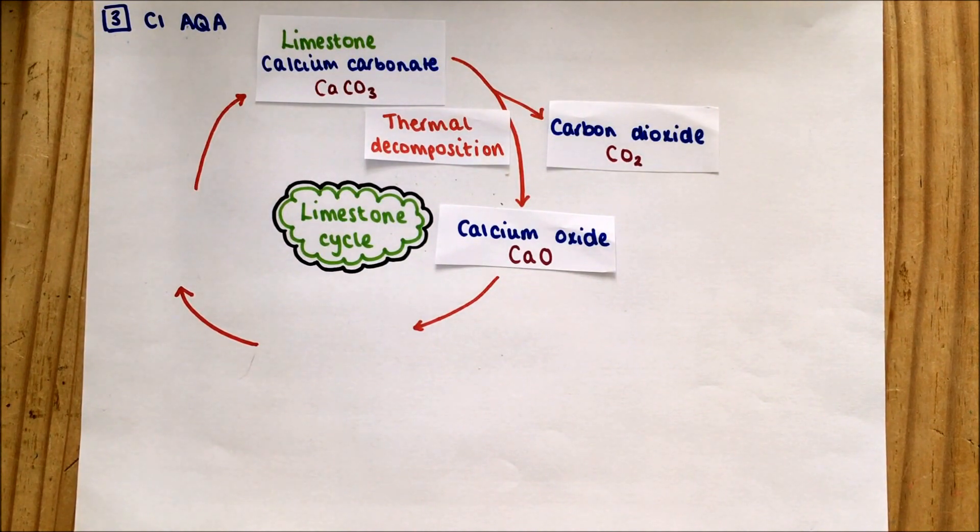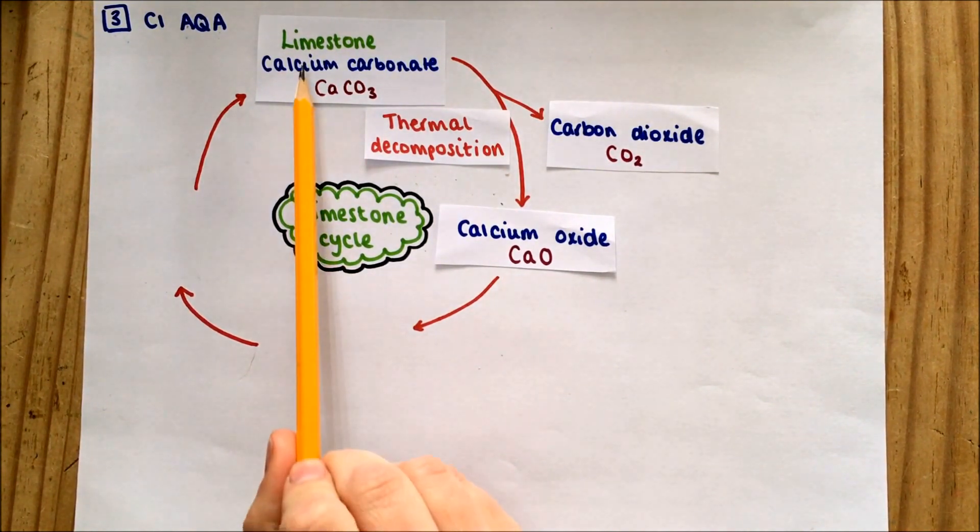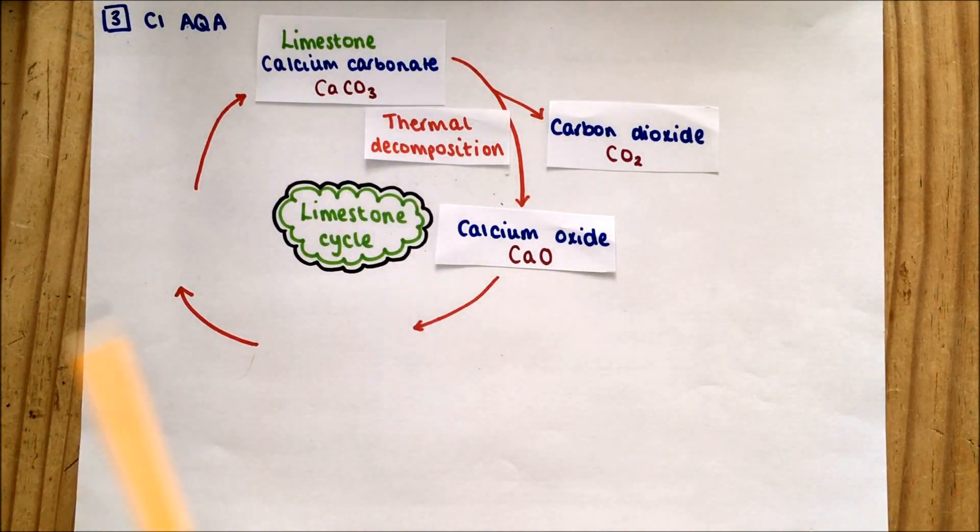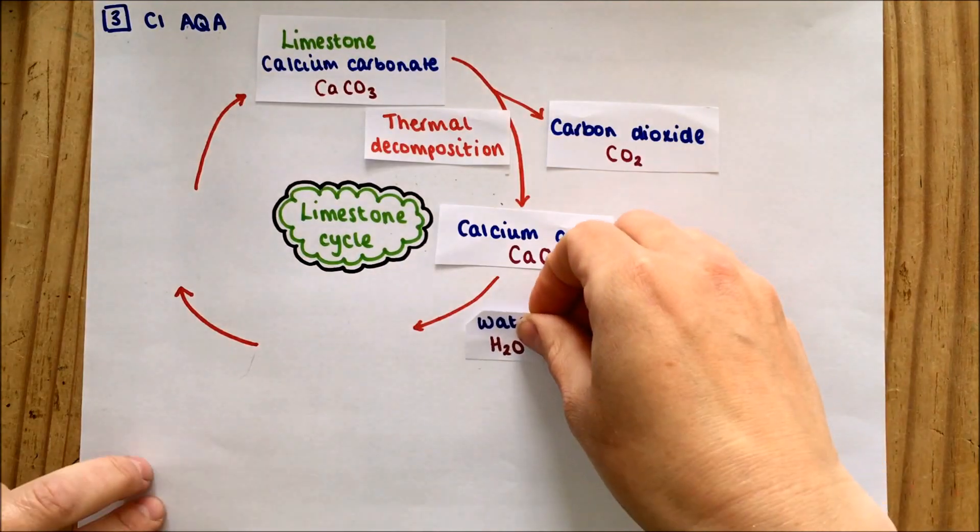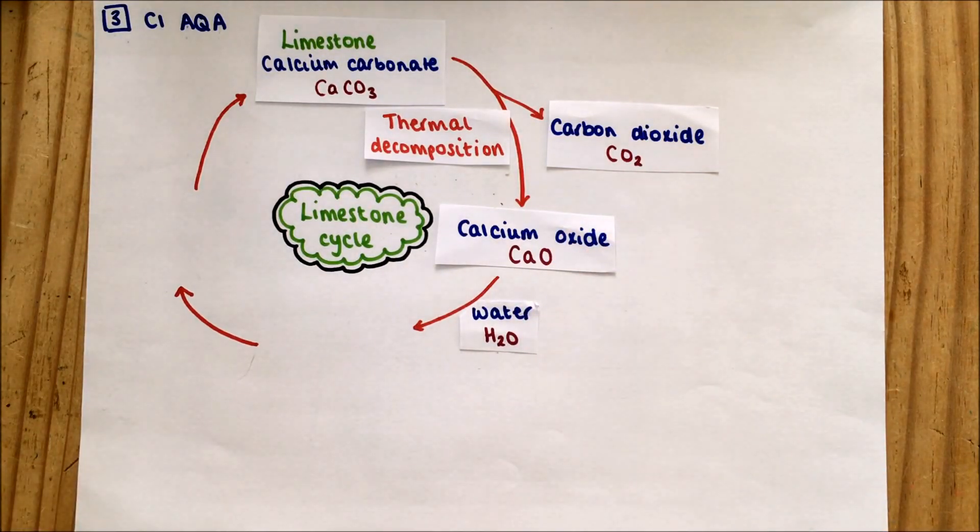So the limestone cycle starts with calcium carbonate which is limestone. Heat it, break it down, turning into carbon dioxide and calcium oxide. If we then add some water to calcium oxide, we get calcium hydroxide.